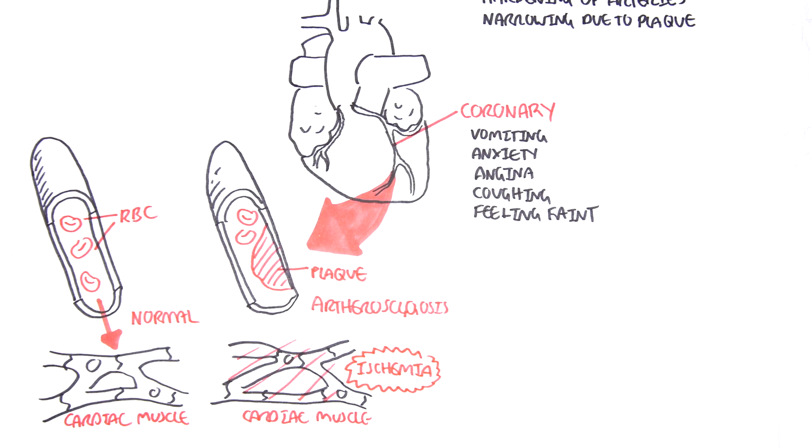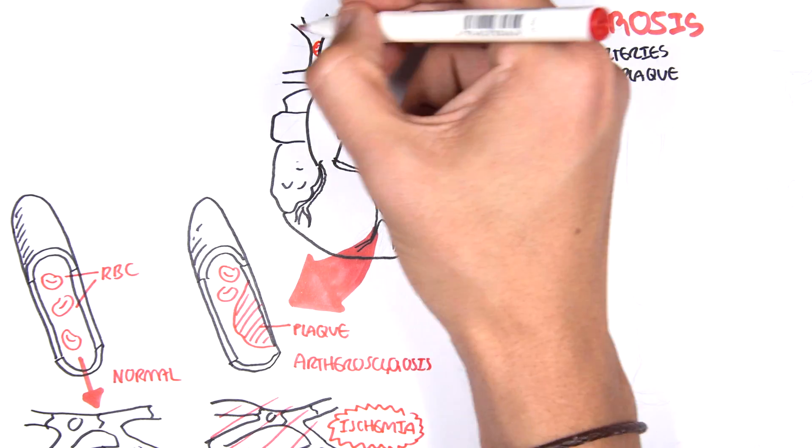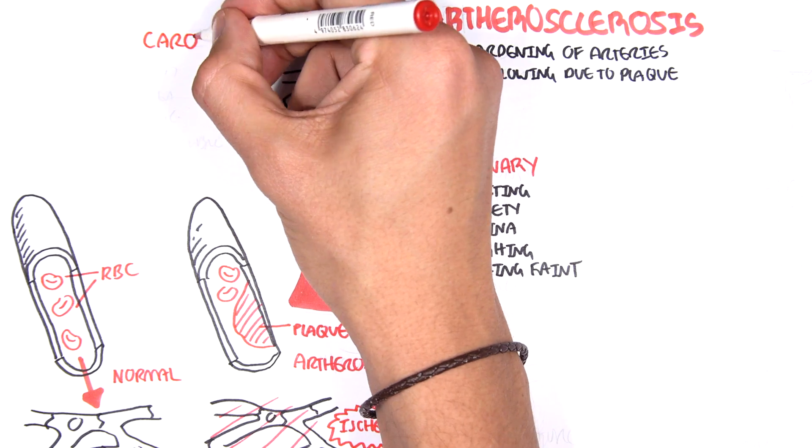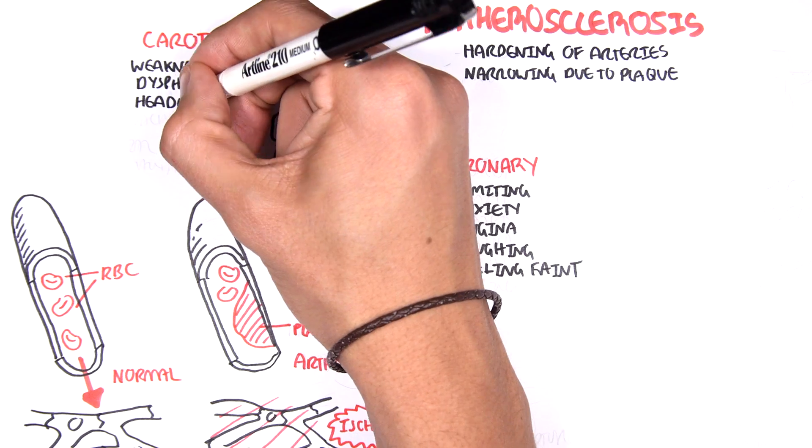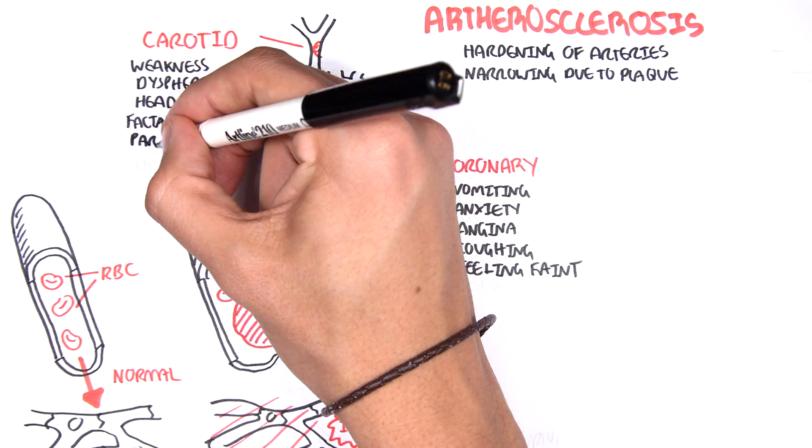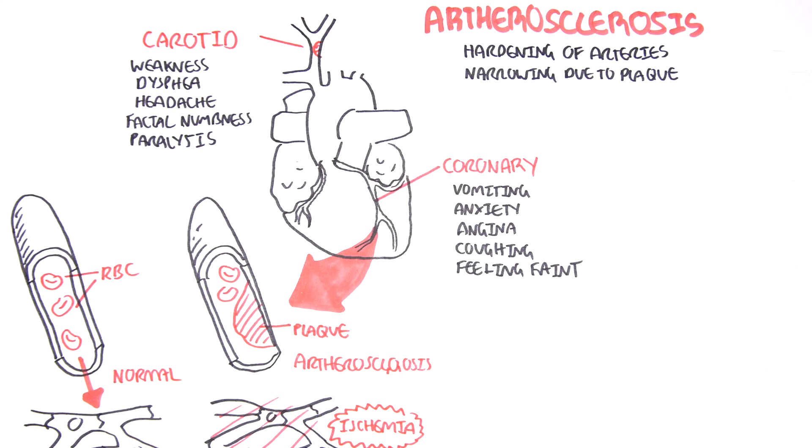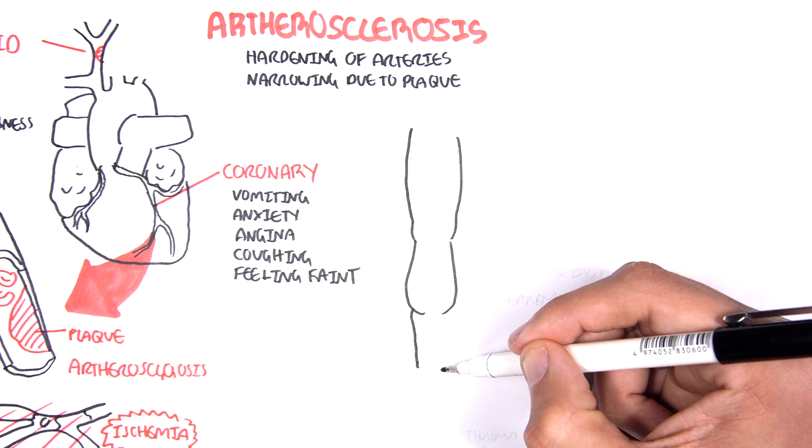Atherosclerosis formation of the coronary arteries can lead to myocardial ischemia. But there can also be atherosclerosis formation in the carotid arteries. This can cause symptoms such as weakness, dyspia, headache, facial numbness and paralysis. And this is because the carotid arteries is the blood supply to your brain. So if you don't get any blood to your brain, you get stroke as well as these symptoms.